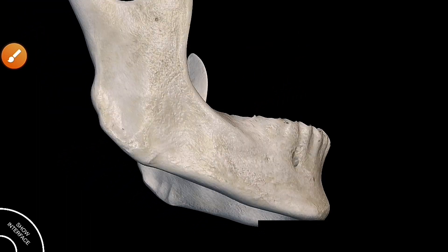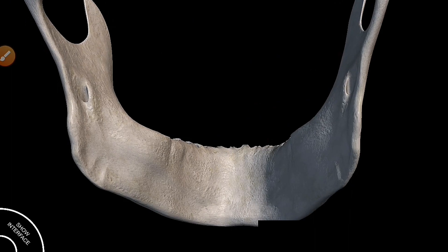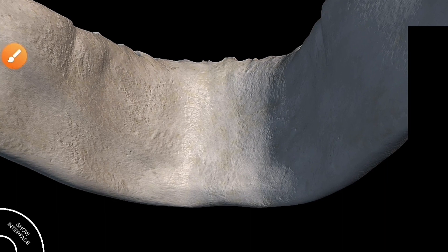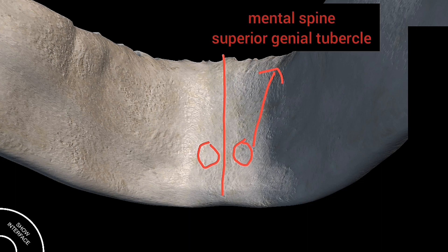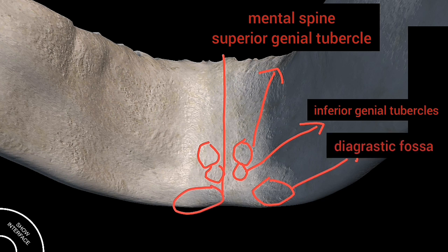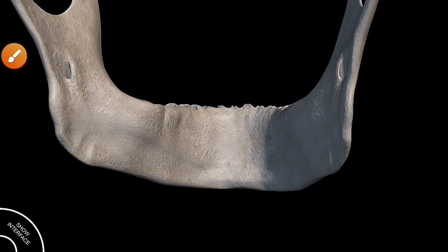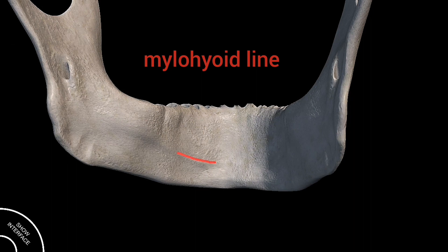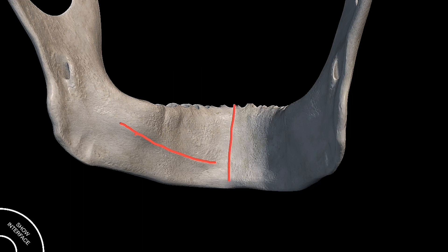The internal surface of the body of the mandible is concave from side to side. Near the lower part of the symphysis, there is a pair of laterally placed spines known as mental spines, also called superior genial tubercles. Just below these there is another pair of spines known as inferior genial tubercles. On either side there is a depression called the digastric fossa, which gives origin to the anterior belly of the digastric muscle. There is also a line called the mylohyoid line.